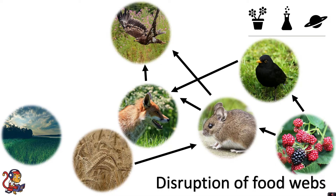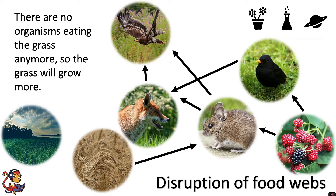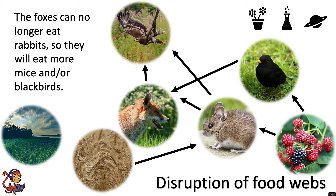The first thing: there are no organisms eating the grass anymore, so the grass will grow more. The foxes can no longer eat the rabbits, so they will eat more mice and/or blackbirds — they will switch their prey choices. Perhaps where before they were eating more rabbits, as they were readily available, they might now have to hunt mice or blackbirds. The fox may be okay, but it depends how many mice and blackbirds are available and how many it can find, because obviously a rabbit is a lot larger.